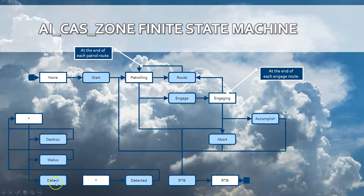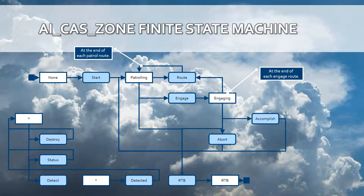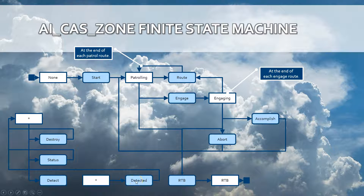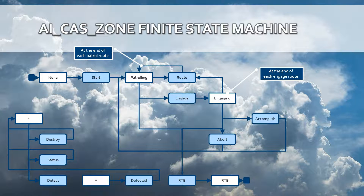During patrolling, targets that are defined within an engaged zone — meaning a zone where the ground targets are located — are constantly being looked for and detected. When ground targets are detected by the AI, the 'detected' event will be raised so that the mission designer can tailor this transition and add custom code, for example calling another airplane to assist with the CAS.